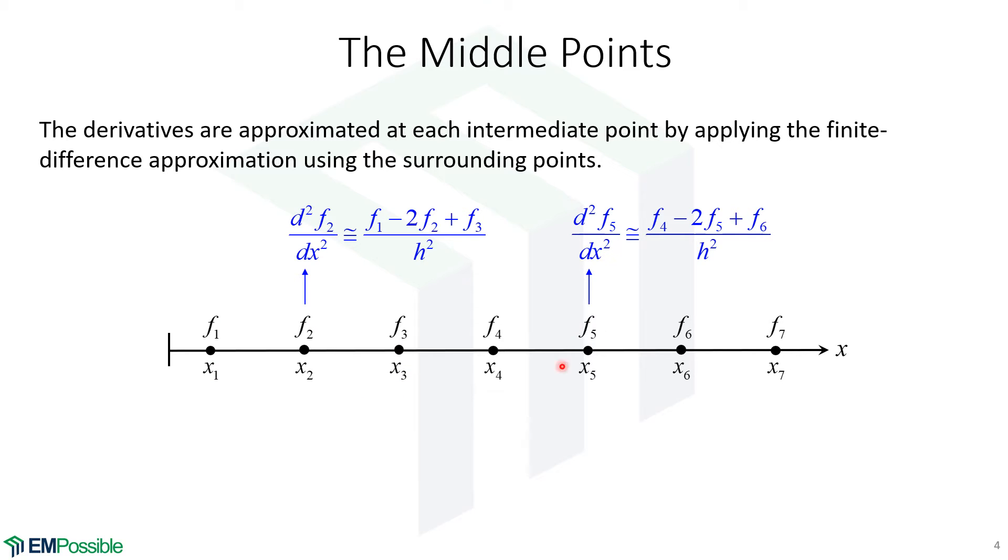The second order derivative at the fifth point is F4 minus 2 times F5 plus F6 divided by H squared, where H is the spacing between the points. So the second order derivative here is being approximated using information from F4, 5, and 6.